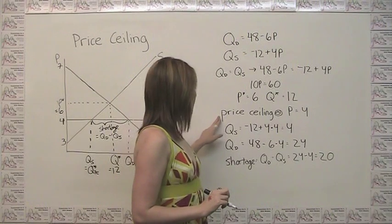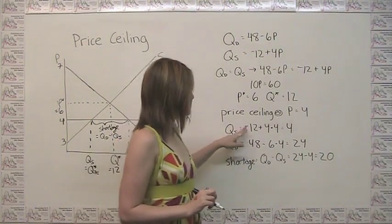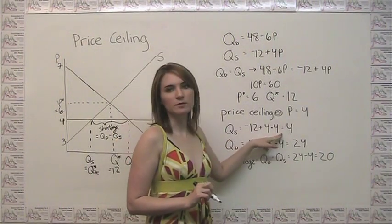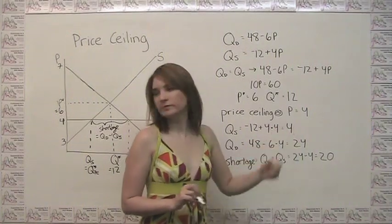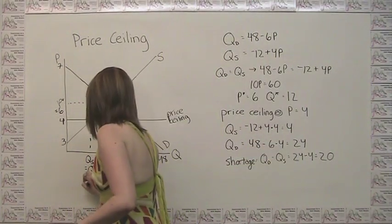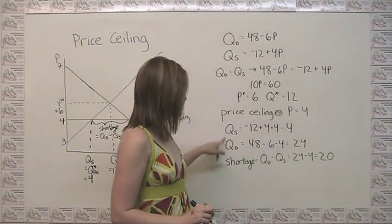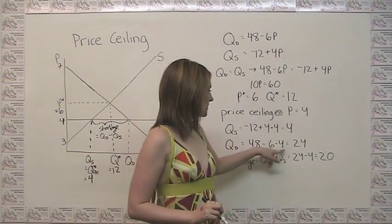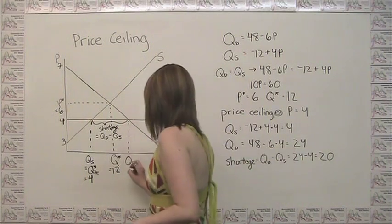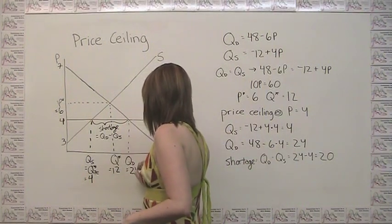Well, we notice that at a price of 4, our quantity supplied equals negative 12 plus 4 times 4, which is just 4. So this guy here is going to be 4. Our quantity demanded is going to equal 48 minus 6 times 4, which is 24. So our quantity demanded is all the way out here at 24.